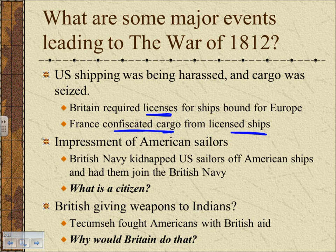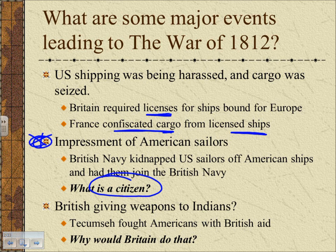Impressment is going to be the biggest issue drawing us into the War of 1812. It's essentially where the British Navy is kidnapping U.S. sailors off American ships and forcing them to join the British Navy. Keep in mind, when we're talking about American identity — what is a citizen and how do we define an American citizen? Another reason is that the British are inciting Indian hostilities, giving weapons to the Indians, which does not sit well with American congressmen. Chief amongst these is the Shawnee chief Tecumseh, who is going to fight Americans with British aid.